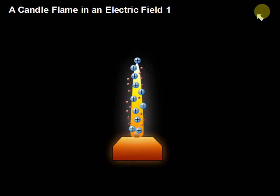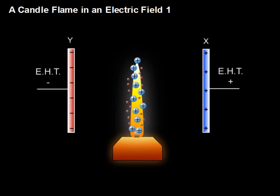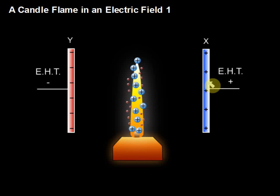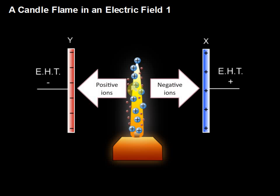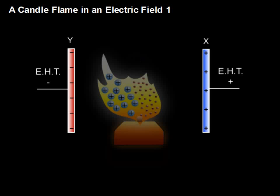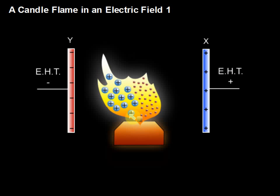If we put this candle flame inside a field — EHT, extra high tension, which is a very high voltage — the positive ions will be pulled towards the negative plate and the negative ions will be pulled towards the positive plate. So the positive ions move to the negative plate and the negative ions move to the positive plate.